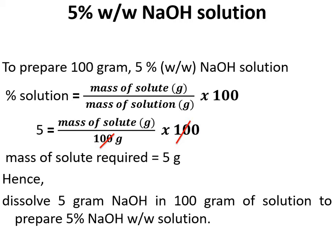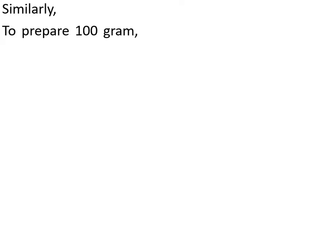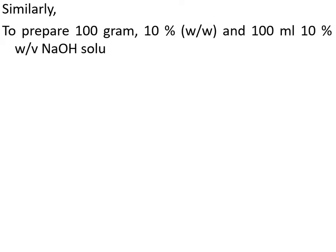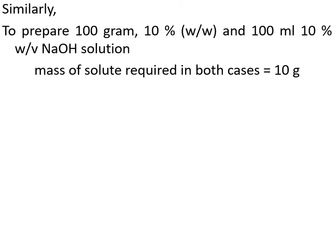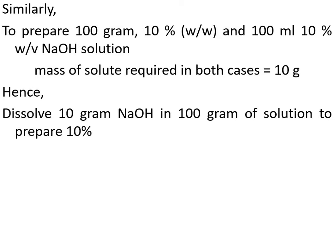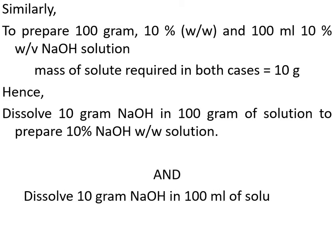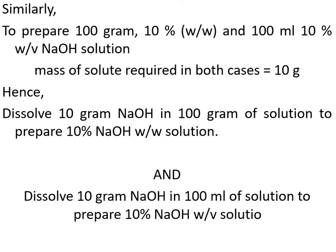The total weight of the solution should be 100 grams including solvent plus solute. Similarly, to prepare 100 grams of 10% weight by weight and 100 mL of 10% weight by volume NaOH solution, the mass of solute required in both cases will be 10 grams. Hence, dissolve 10 grams of sodium hydroxide in 100 grams of solution for 10% weight by weight, and dissolve 10 grams of sodium hydroxide in 100 mL of solution for 10% weight by volume.